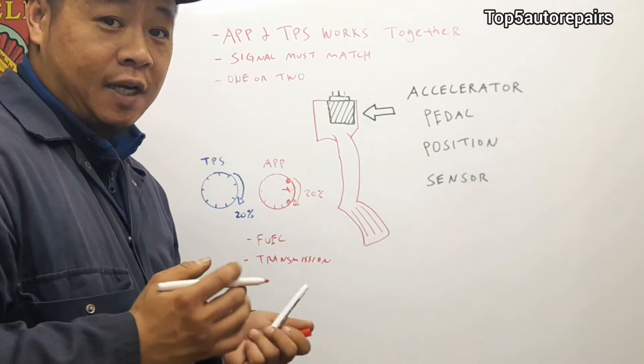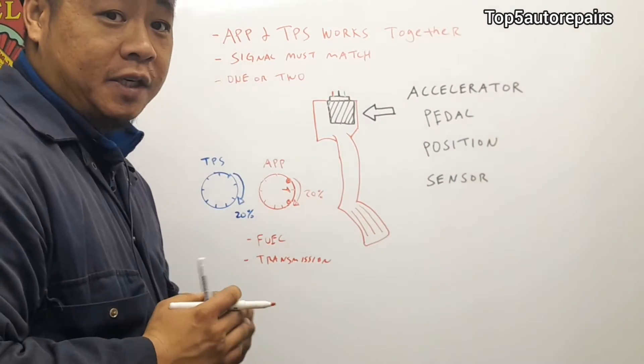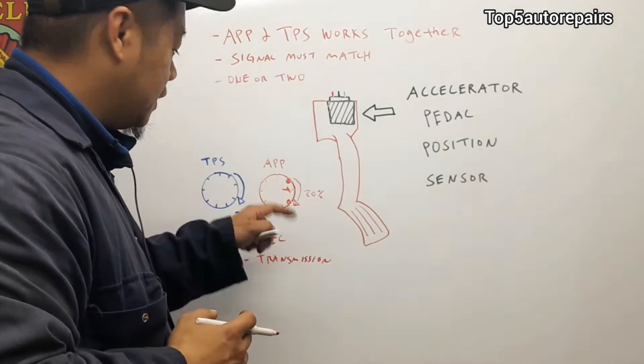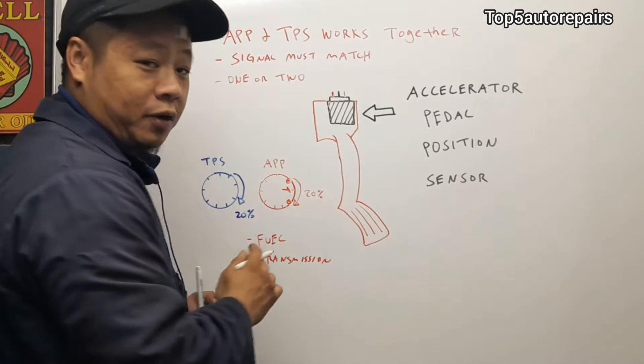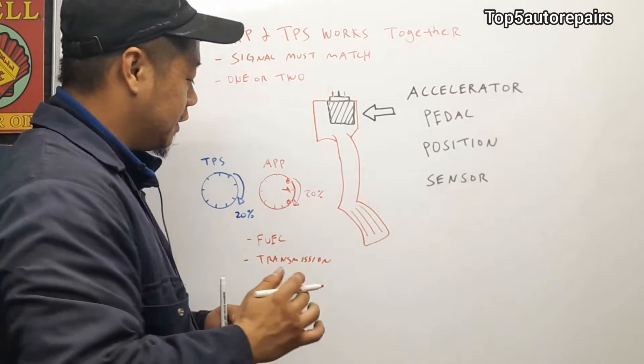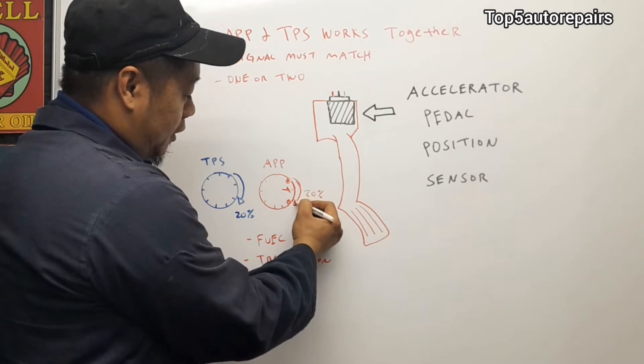The APP sensor contains a lot of little contact points on the inside. The contact points tell the computer the current position. Let's say this is the starting point where the gas pedal is at normal position. If you want to step on it 20%, it's going to travel from here to here.